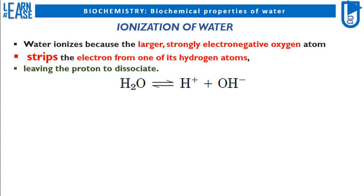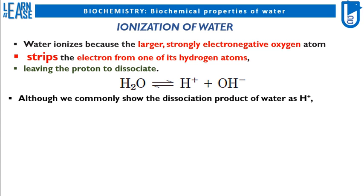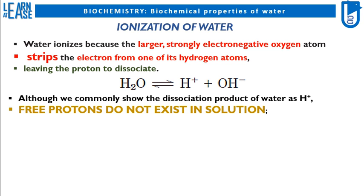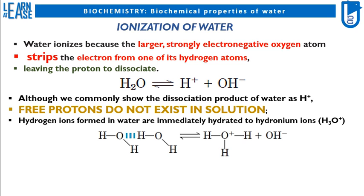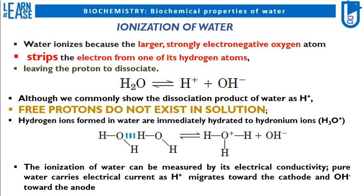The dissociation produces OH minus (hydroxyl ion) and H plus ion. Although we commonly show the dissociation product of water as H plus, free protons do not exist in solution. Hydrogen ions formed in water are immediately hydrated to hydronium ions, H3O plus. The ionization of water can be measured by its electrical conductivity, as pure water carries electrical current.